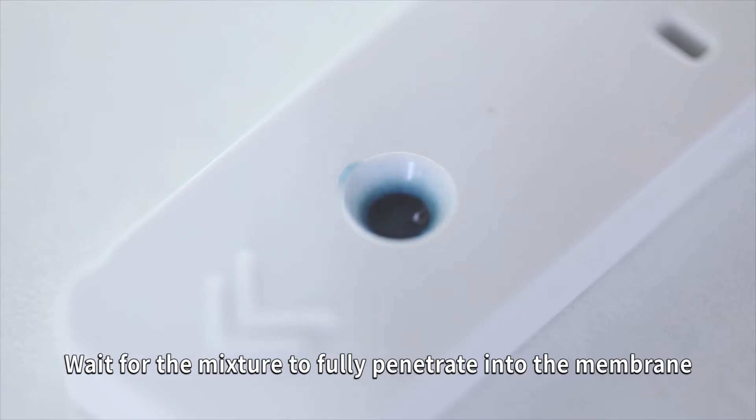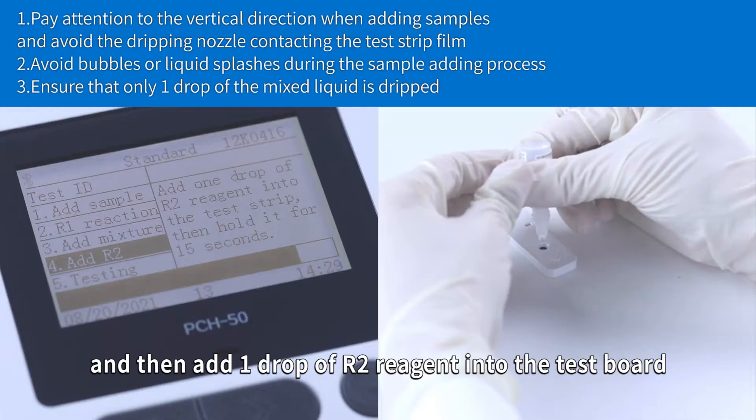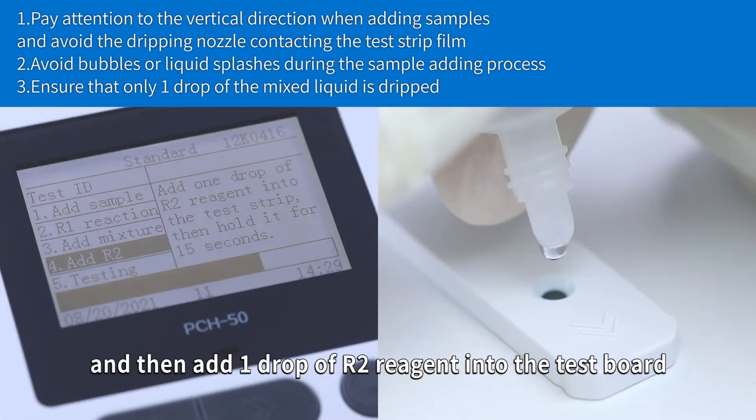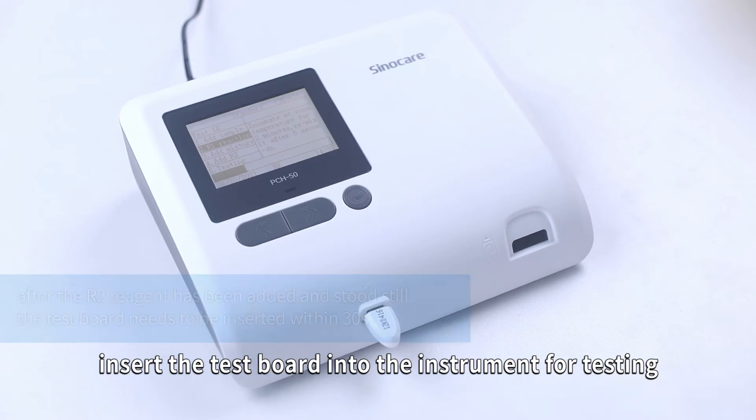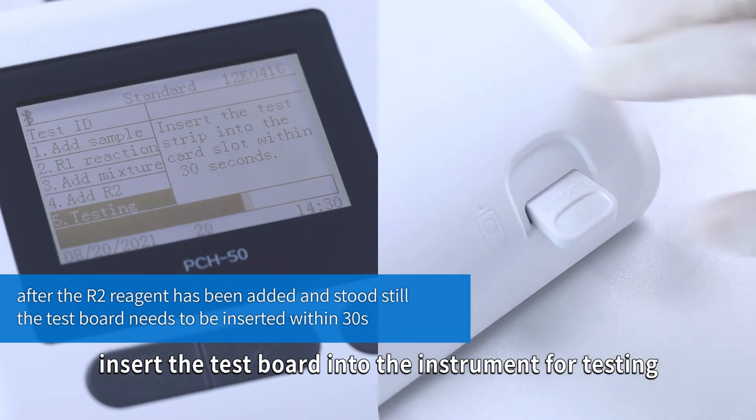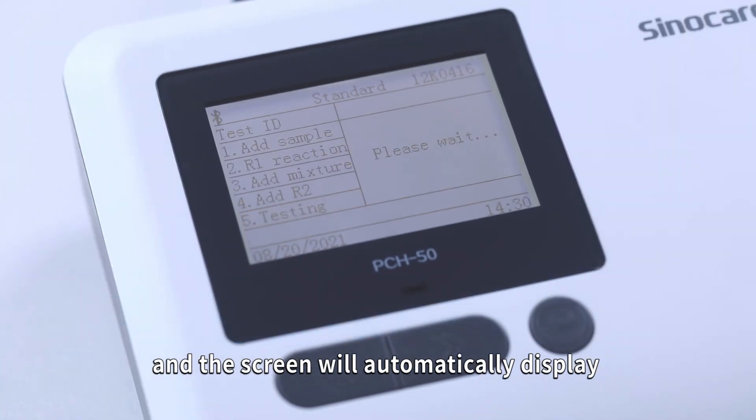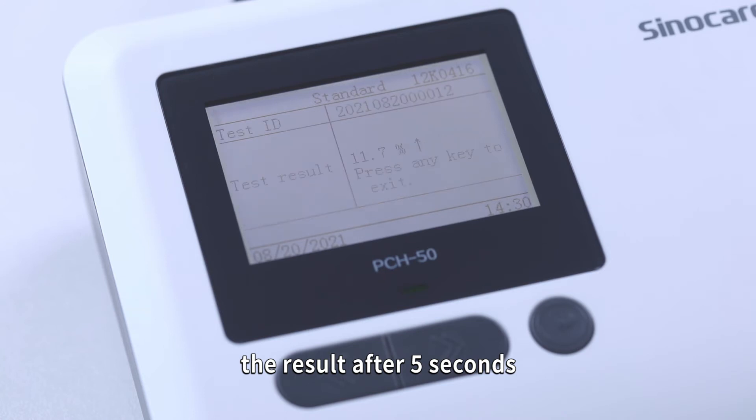Wait for the mixture to fully penetrate into the membrane, and then add 1 drop of R2 Reagent into the test board. After standing for 15 seconds, insert the test board into the instrument for testing, and the screen will automatically display the result after 5 seconds.